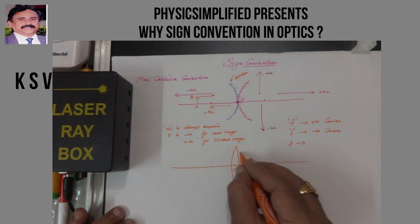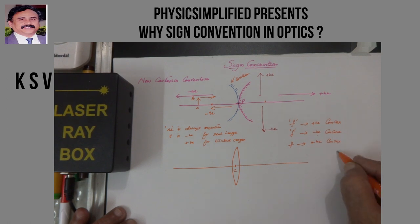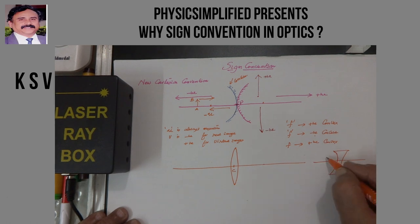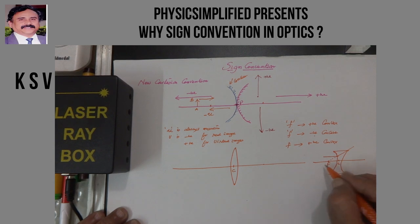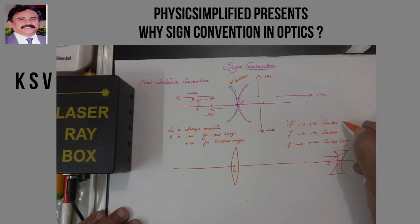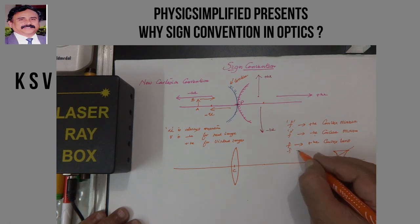For a convex lens, a ray passing parallel to the principal axis passes through the focus on the right side of the lens — therefore F is positive for a convex lens. For a concave lens, the ray will be diverged and the focus is on the left side, so you measure opposite to the direction of light — therefore it is negative. So for both the convex lens and convex mirror, the focal length is positive, and for concave mirror and concave lens, F is negative.